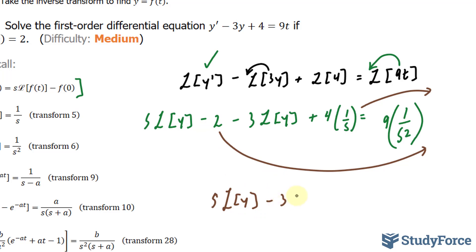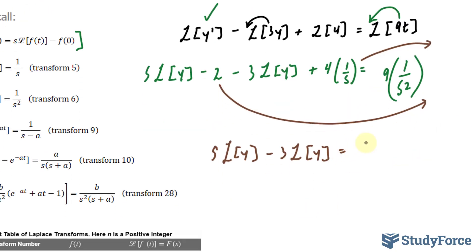Minus 3 times the Laplace transform of y, and this term is no longer there (it's on the other side): 9/s² − 4/s + 2.